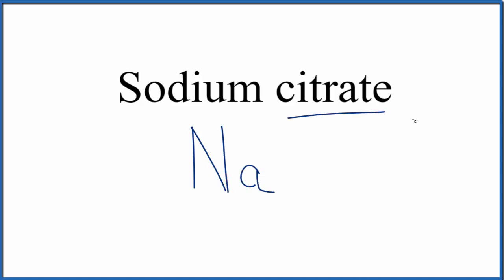But this citrate here, that's a little bit odd. When we look at the end, we see A-T-E. That means we're not going to find this on the periodic table. The citrate ion is a polyatomic ion.